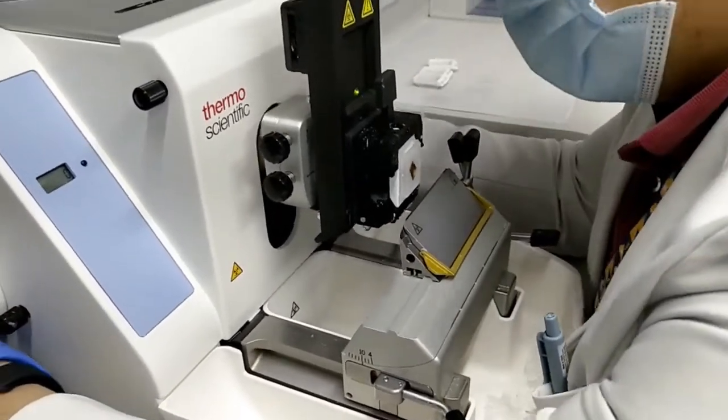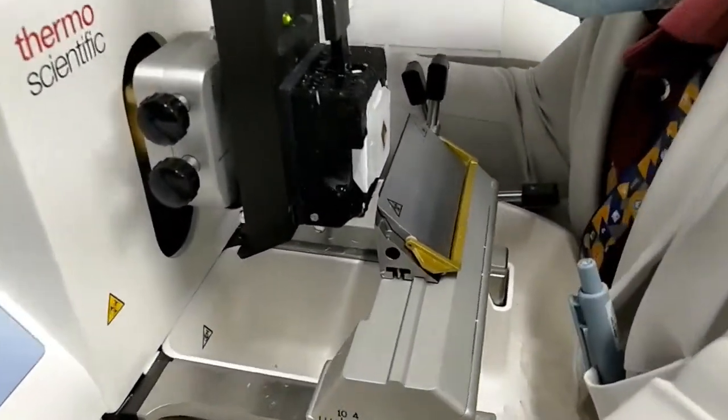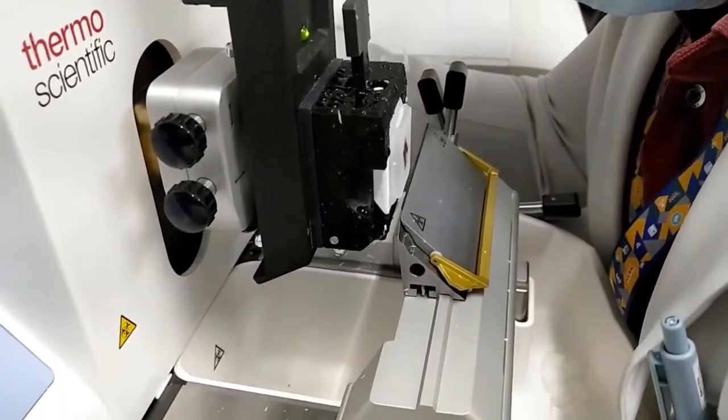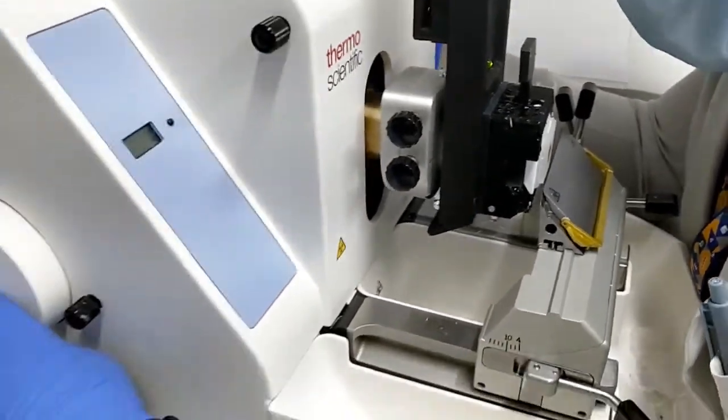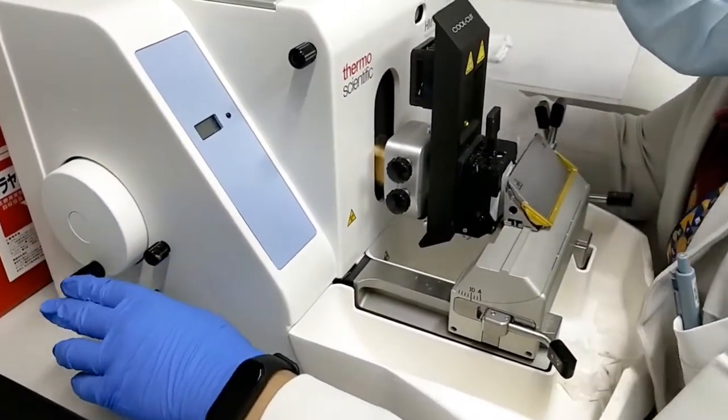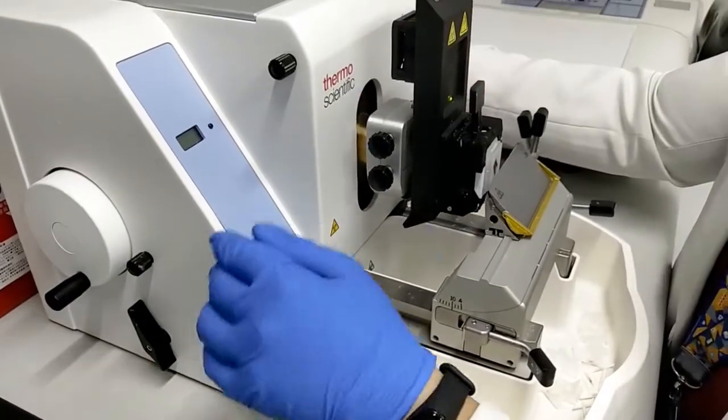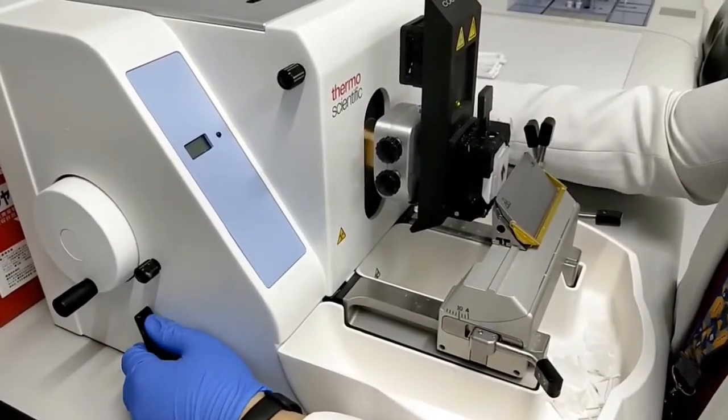Let's go to the block. You have to adjust so that the block fits. The first step in microtomy is trimming out excess tissue.